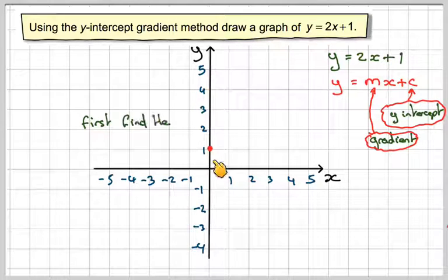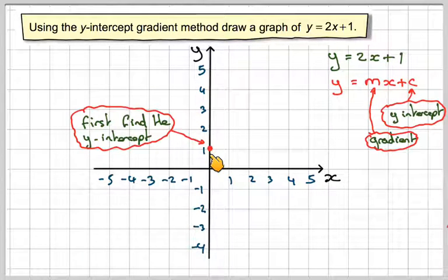The y-intercept here is at 1, so first find that and plot that point on our graph. It's on the y-intercept, on the y-axis, this vertical axis here.